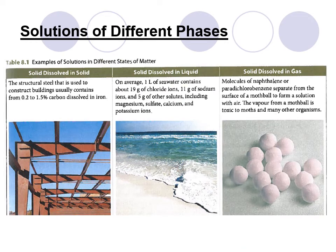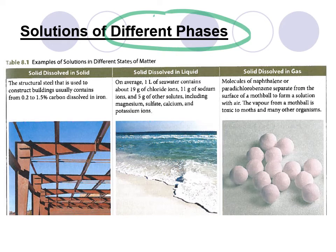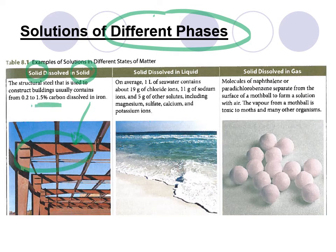Solutions can have different phases — there are nine examples. A solution does not have to be a solid in a liquid. You can dissolve a solid within another solid; you'd have to melt them first, but once solidified they remain a solution. Steel is iron with other things dissolved in it — you can't see one part being different from the other, the composition is variable, and you can make different types of steel with varying amounts of iron and carbon. So steel is a solid-solid solution.